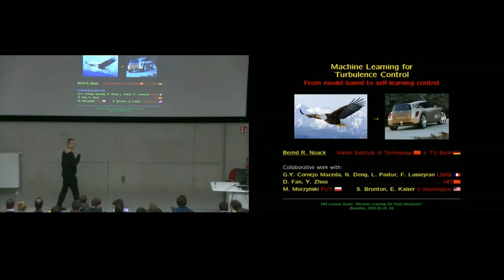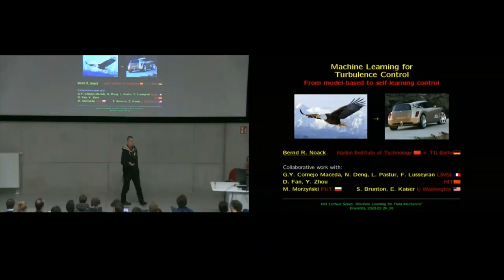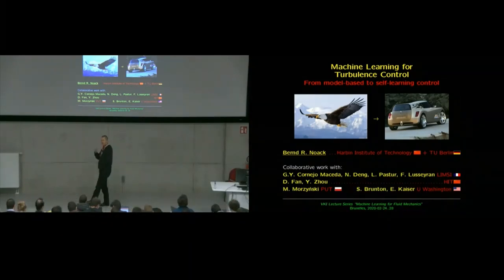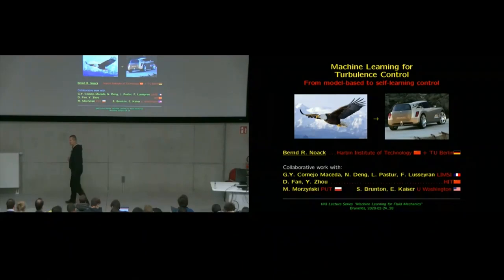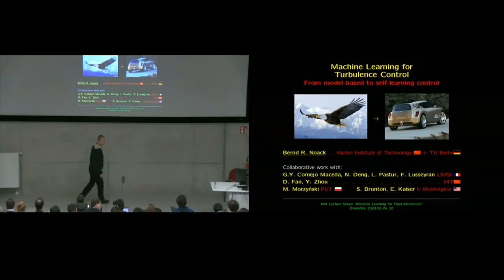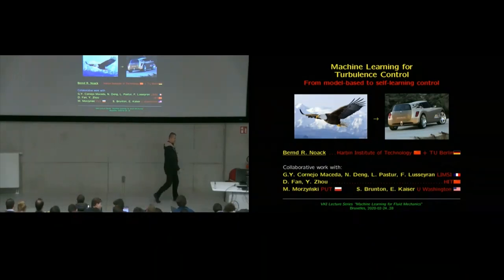So what is missing is, what do we do if we want to control a complex, nonlinear, high dimensional system like turbulence, and we have, say, 10 actuators, 10 sensors? What should be our strategies for optimizing a control goal? And this is what I will talk about today.